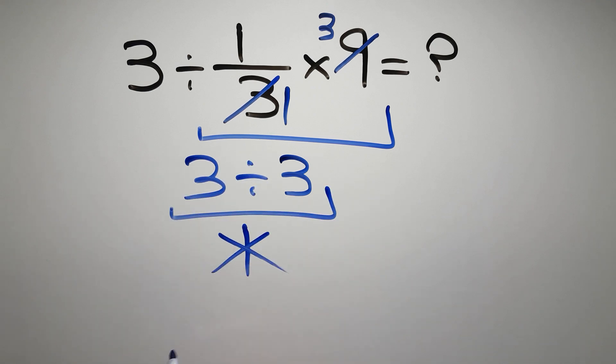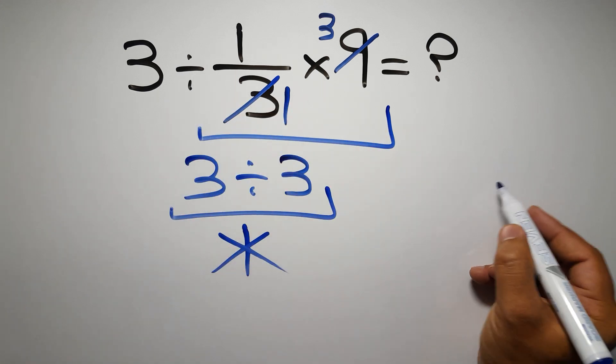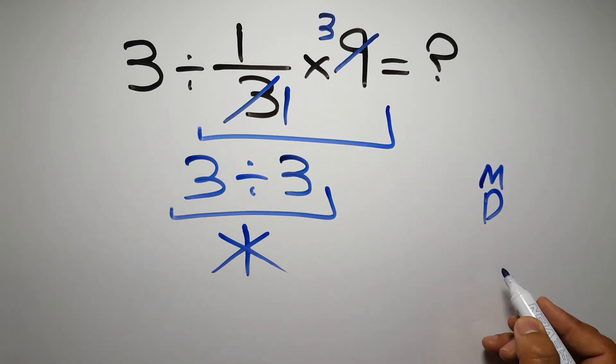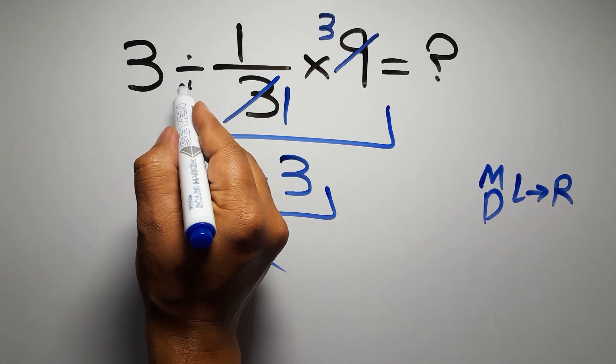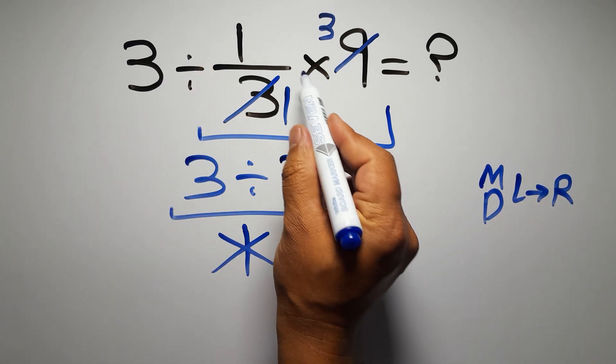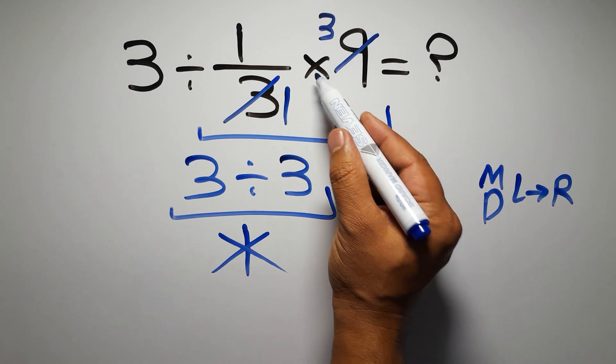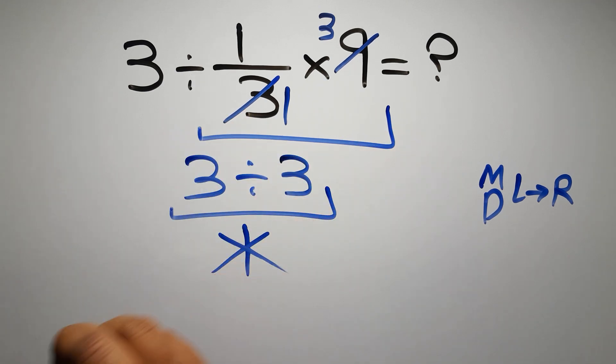But this answer is not correct because according to the order of operations, multiplication and division have equal priority and we have to go from left to right. So here, first we have to do this division, then this multiplication. If we do this multiplication before this division, it is wrong.